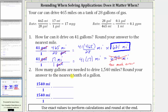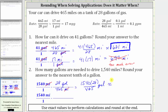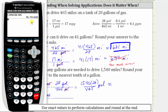For number two: how many gallons are needed to drive 1,540 miles? We begin by writing this as a fraction with a denominator of one. Because we want miles to simplify out, we use the rate with miles in the denominator, which is the second rate. So the correct way is to use the exact rate of 28 gallons per 465 miles. Notice how the units of miles simplify out, leaving us with 1,540 times 28 divided by 465 gallons. Going back to the calculator and rounding to the nearest tenth, because we have a three in the hundredths place value, we round down to 92.7 gallons.